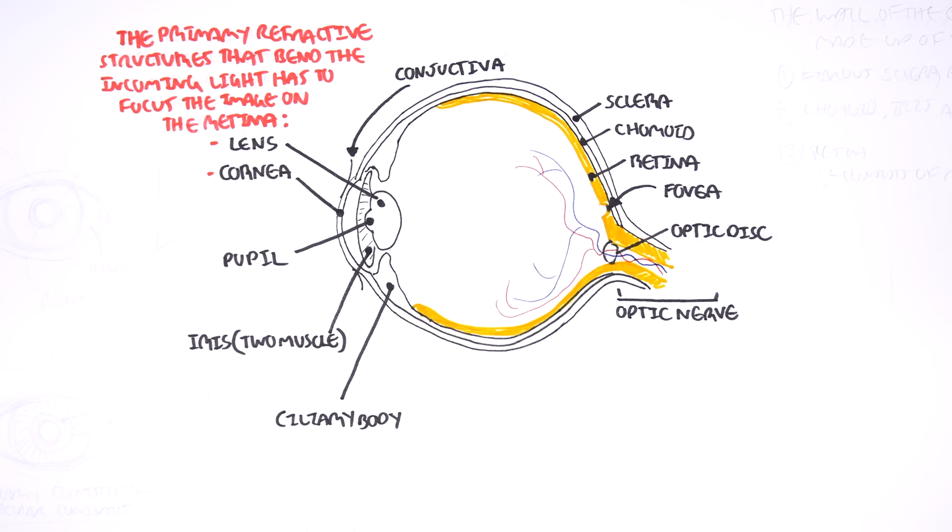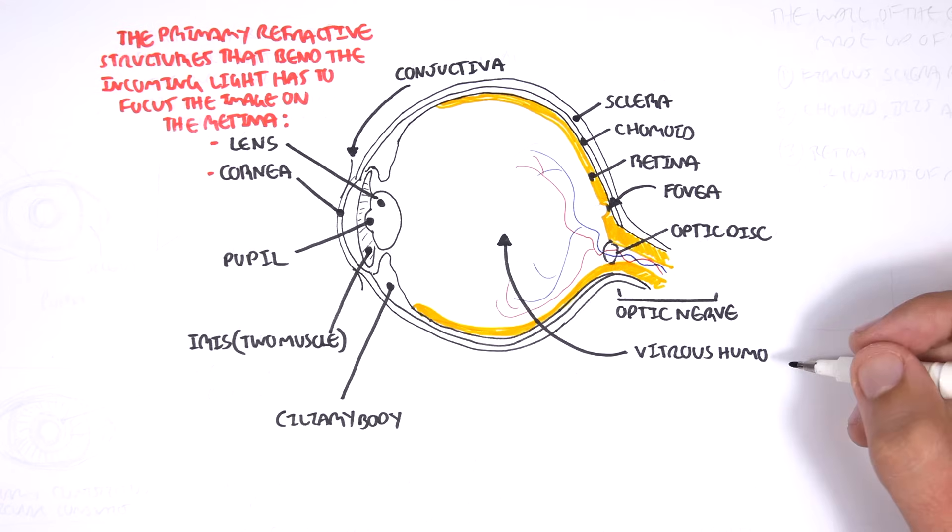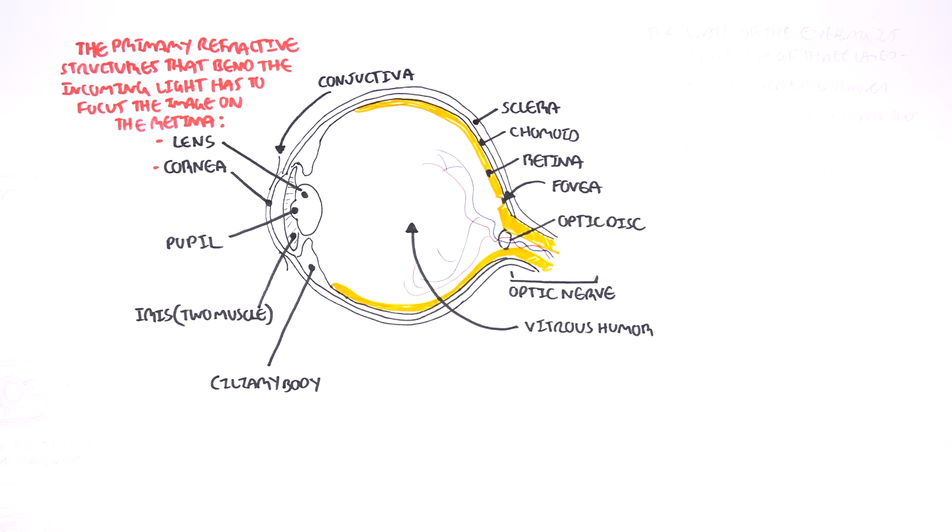So what is inside the eyeball itself? Well, there is a fluid inside the eyeball. This fluid is called the vitreous humor. The vitreous humor occupies the posterior cavity of the eye, and we will learn about the anterior cavity next.